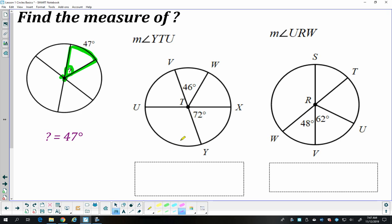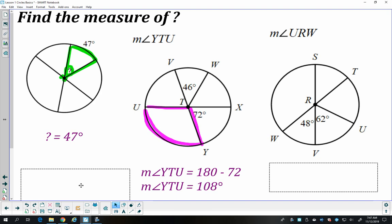Let's look at YTU. So angle YTU is right there. And this one's a little bit more difficult. It intercepts this arc. And so this angle is 72, and it's vertical from this one, so this one's also 72. My green arc and my purple arc together make a semicircle, 180 degrees. And so if I subtract 180 minus 72, I'm going to get this angle that's 108.